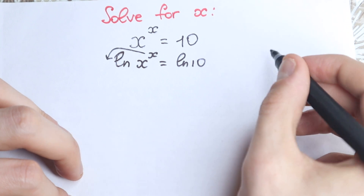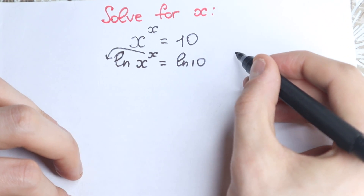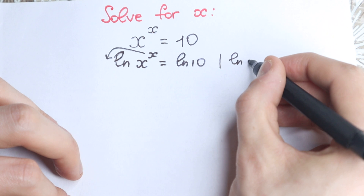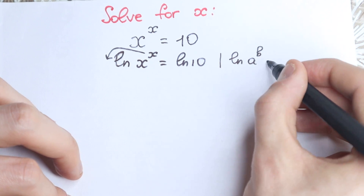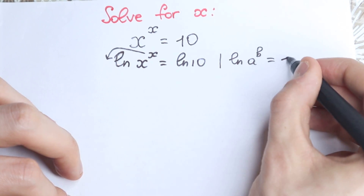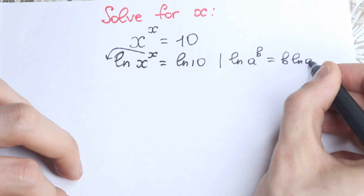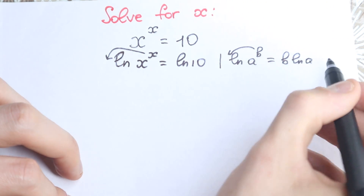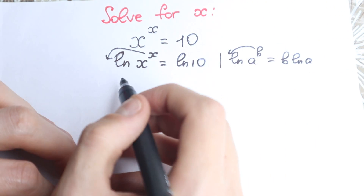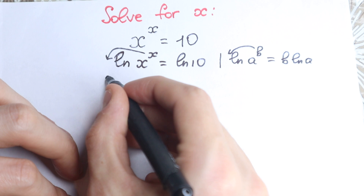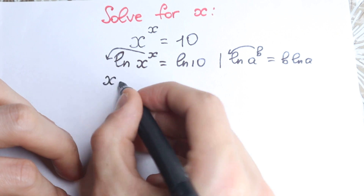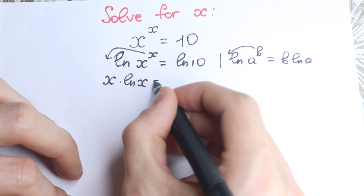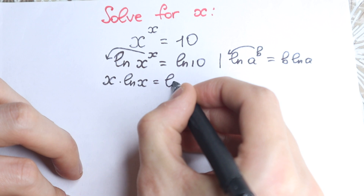This is the great log property: if you have natural log of a to the power b, you can easily write it as b times natural log a — so this b jumps out in front. And right now we have the expression x times natural log x equal to natural log 10.